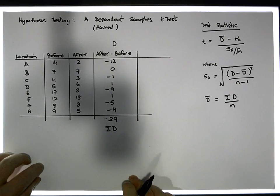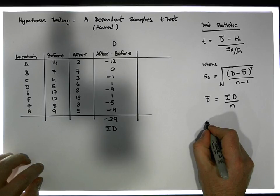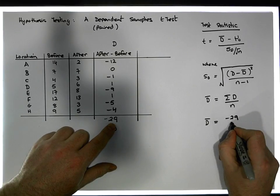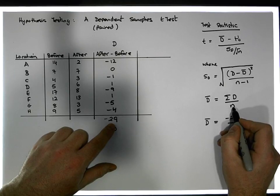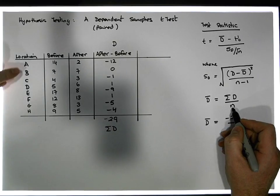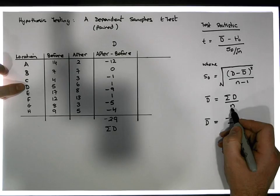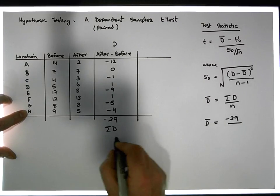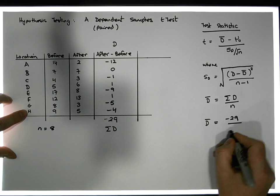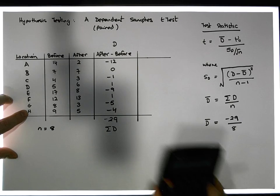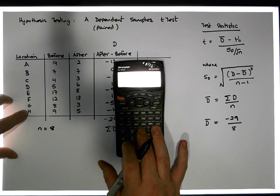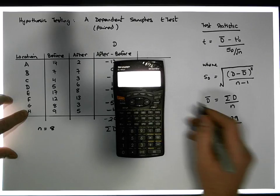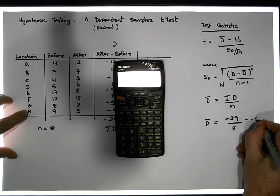So what we now have is that d-bar is equal to the sum of the differences, which is minus 29, divided by the sample size — that's how many paired observations we have. We have 1, 2, 3, 4, 5, 6, 7, 8 observations, so n is equal to 8. So we divide minus 29 by 8, which gives us an average of minus 3.625.